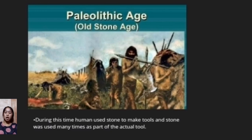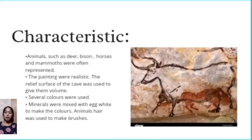Paleolithic paintings have distinct characteristics: animals such as deer, bison, horses, and mammoths were often represented. The paintings were realistic, using the relief surface of the cave to give them volume. Several colors were used — minerals were mixed with egg white to make the colors, and animal hair was used to make brushes.